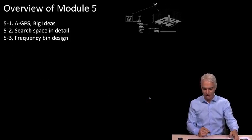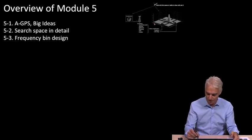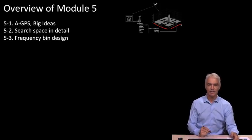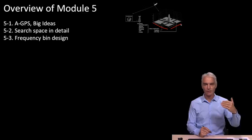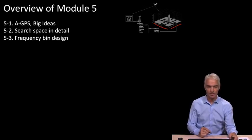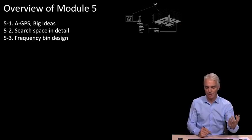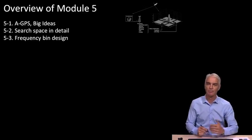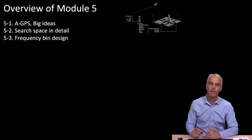Well, Module 5, we're going to begin with the acquisition search space. There it is up there. And that's going to introduce us to assisted GPS. And the big idea of assisted GPS is that we get the data from the satellite through some other means, and then because of that, a lot of good things happen.